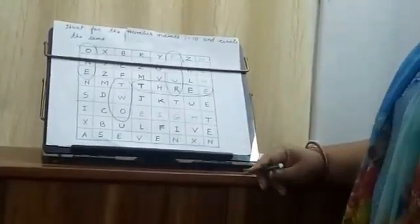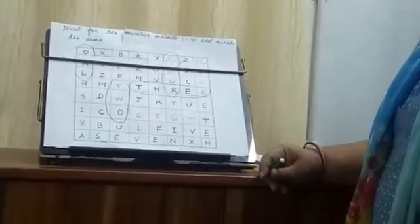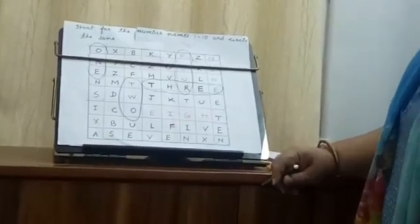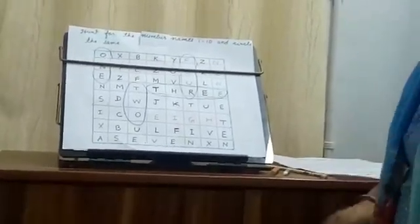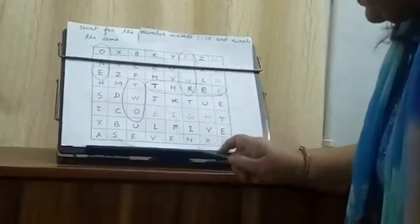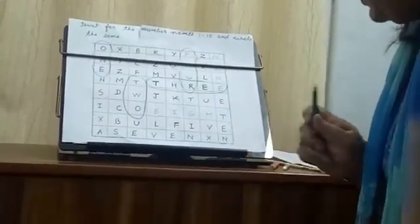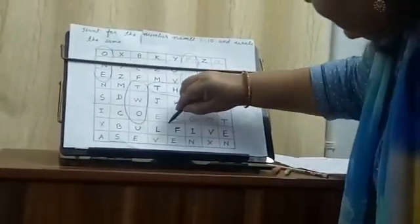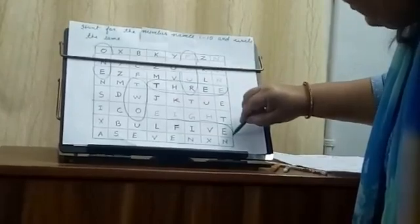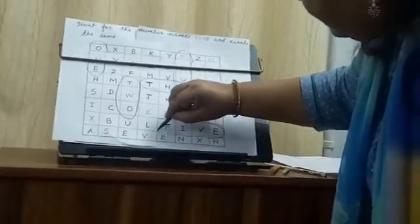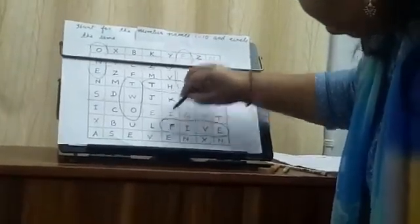Now after 4, what number will come? 5. Let's find out where is 5. Where is 5? F, I, V, E. 5.